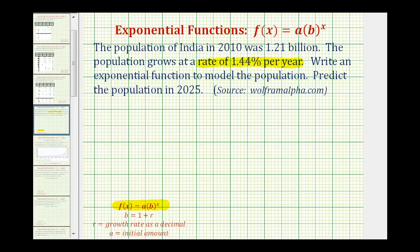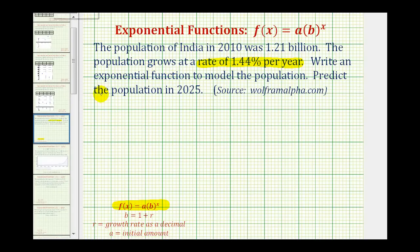Going back to our problem, because our function represents the population of India, we're going to write a function p in terms of t, where t is going to be the number of years after the year 2010. Again, a is the initial amount, or in this case, the initial population, so that'll be 1.21 billion.